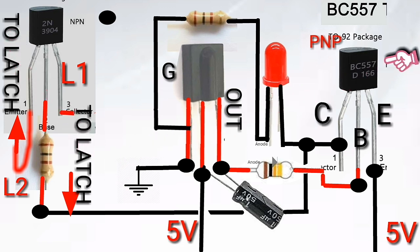The emitter collector current of the BC557 with a maximum current of 25 milliamp ensures the current supply to the entire circuit will be enough for controlling devices.